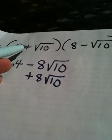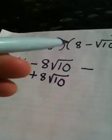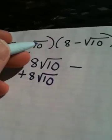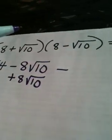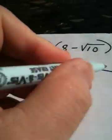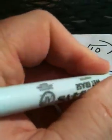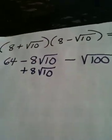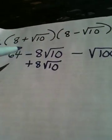Positive times negative is negative, and the square root of 10 times the square root of 10 becomes the square root of 100. You put them under one radical. These two middle terms disappear.